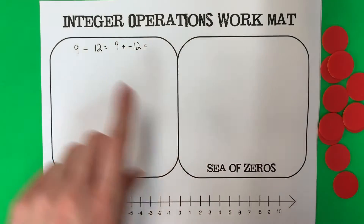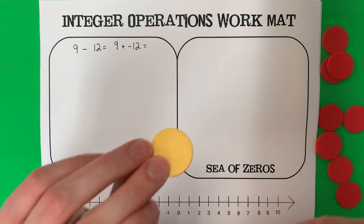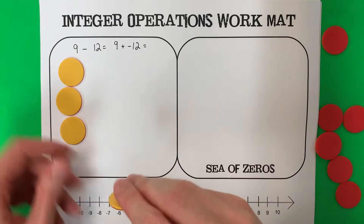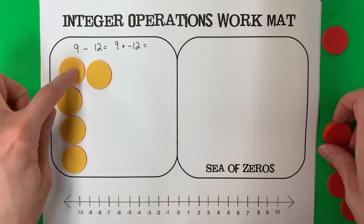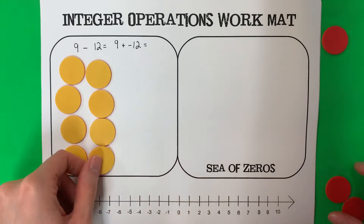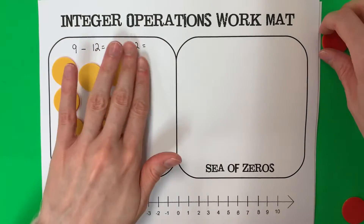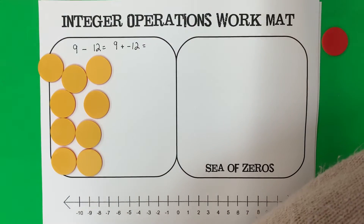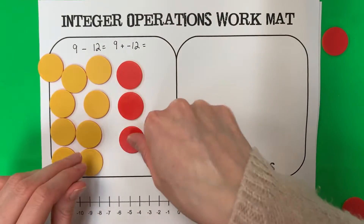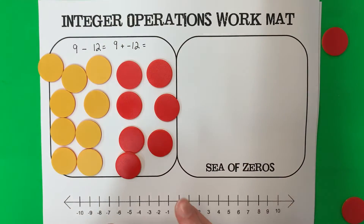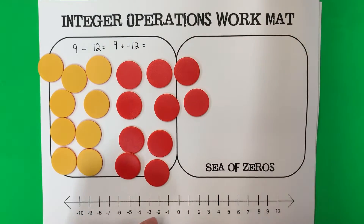So we have positive 9, which means 9 yellows because it's positive. And then I have negative 12, so I'm going to need 12 reds. Counting them out: 1 through 9 yellows and 1 through 12 reds.